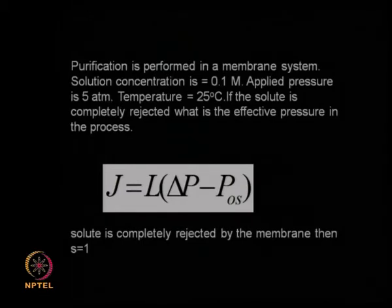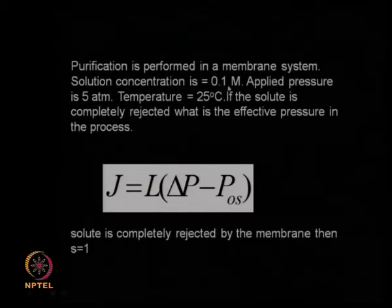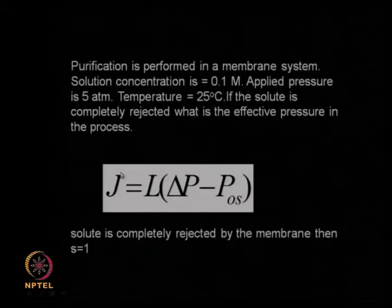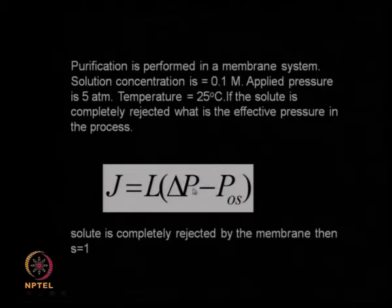Let us look at a simple problem. We are trying to do a purification using a membrane; the solute concentration is 0.1 mol, we are applying a pressure of 5 atmospheres, and the temperature is 25°C. Since the solute is completely rejected — the downstream has only pure solvent — S = 1 and the equation becomes J = L·(ΔP − P_os), where P_os is the osmotic pressure decreasing the driving force.